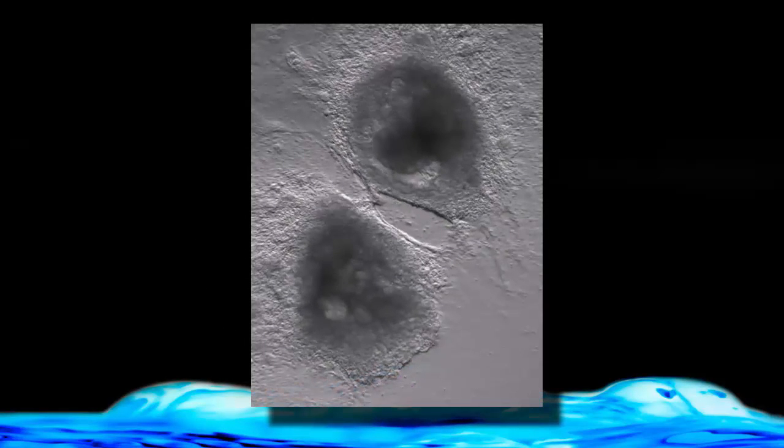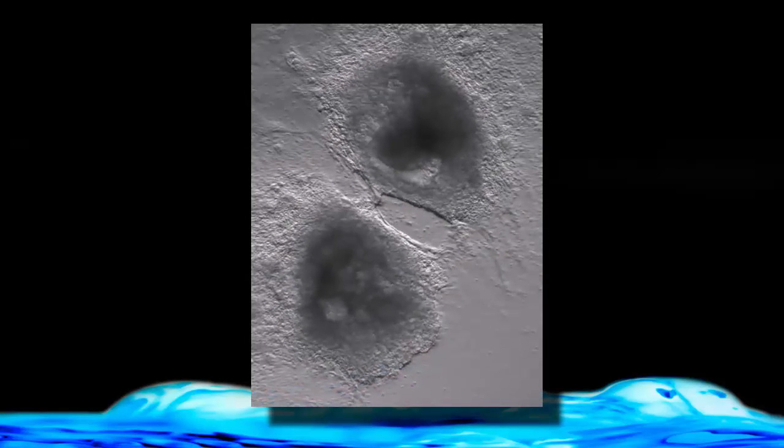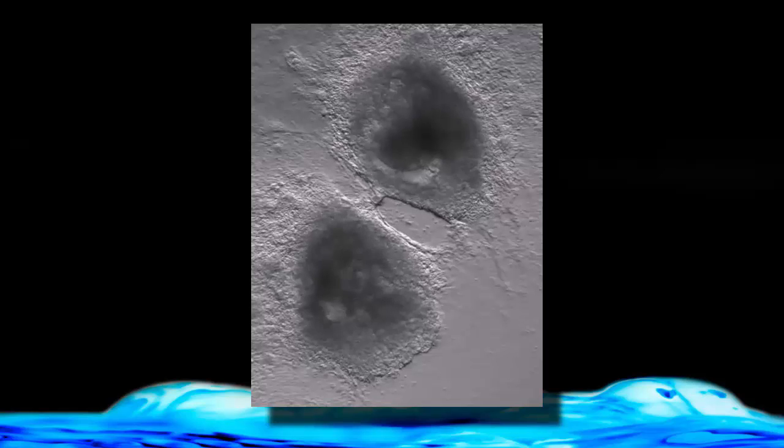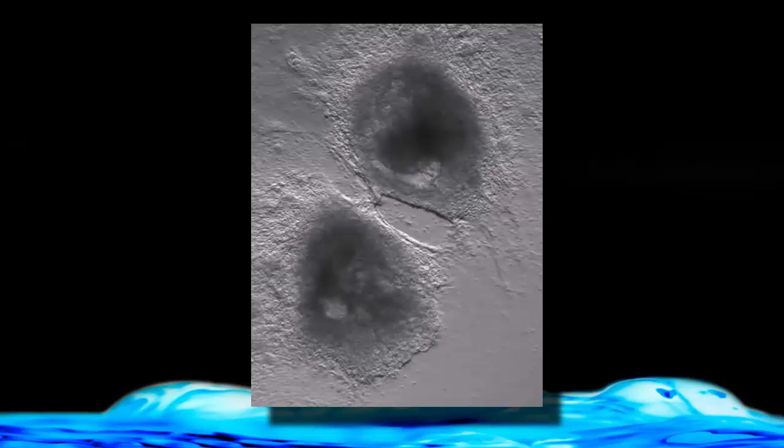But if you brought them close enough together where they touched, they would quickly synchronize and start to beat together. This is due to the gap junctions that form in the adjoining cell membranes. Left on their own, these cells would beat about 20 to 30 times a minute, but we know that's not a fast enough rate to sustain life.